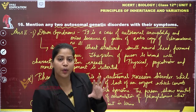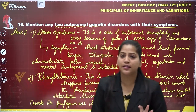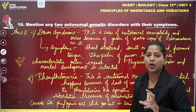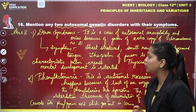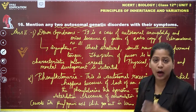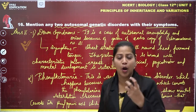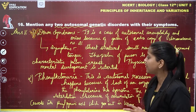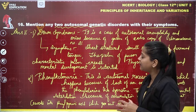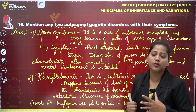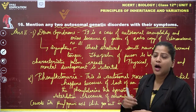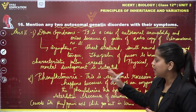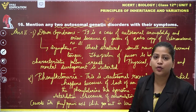This covers question number 16 — the two autosomal genetic disorders: Down syndrome along with its symptoms, and phenylketonuria along with its symptoms.